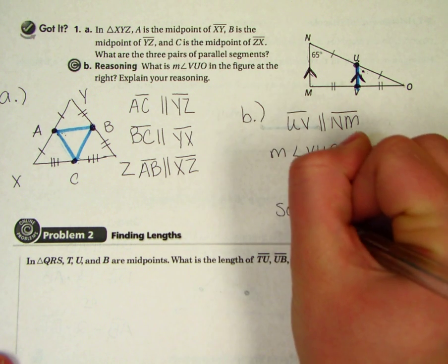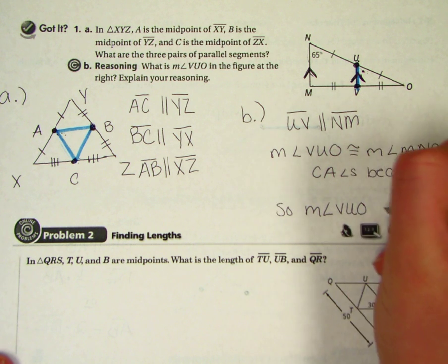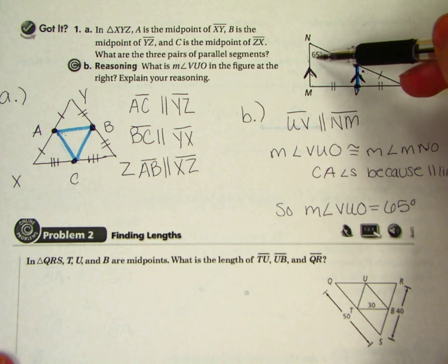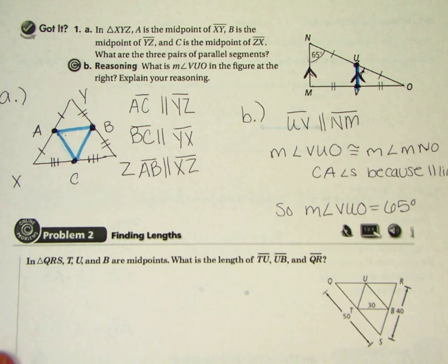So the measure of angle V, U, O equals 65 degrees. Because V, U, O is congruent to M, N, O and M, N, O equals 65 degrees. This angle here is also equal to 65 degrees.